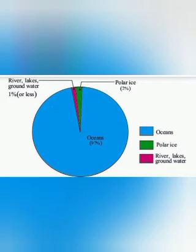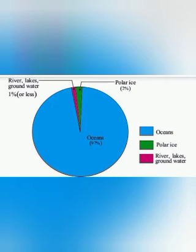Now let us look at the distribution of water bodies. Three-fourths of the earth's surface is covered by water. From this, 97% of the total earth's water is found in oceans and seas, but this water is salty and not good for human use. The fresh water is only 3%, and from this, 2% is in frozen form in glaciers. Only 1% of the earth's water is easily available and fit for human use, found in streams, ponds, rivers, lakes, and as groundwater.